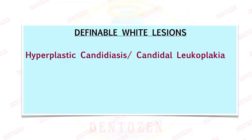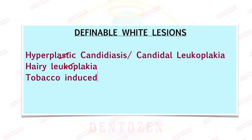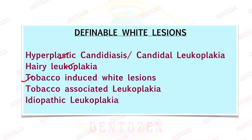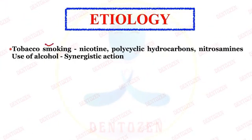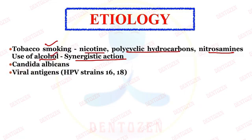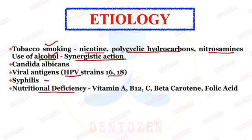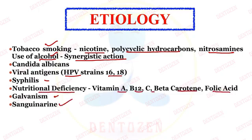Other white definable lesions include hyperplastic candidiasis, hairy leukoplakia, tobacco-induced white lesions, tobacco-associated leukoplakia, and idiopathic leukoplakia. Regarding etiology, the most common cause is tobacco — smoking — as smoke contains nicotine, polycyclic hydrocarbons, and nitrosamines. Alcohol has a synergistic reaction with tobacco. Other causes include Candida albicans, viral agents such as human papillomavirus strains 16 and 18, syphilis, nutritional deficiencies like vitamins A, B12, C, beta-carotene and folic acid, sanguinarine (a herbal extract in some toothpastes), UV radiation, and idiopathic cases where the cause is unknown.